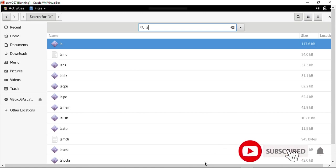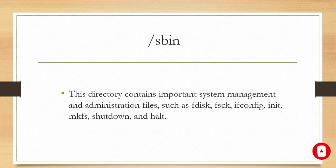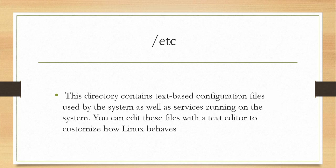Next we have the slash sbin directory. Same as the bin directory, it contains the binaries of some commands, but this directory contains specifically the commands related to the system. So slash sbin contains system management commands — for example, if you're checking network information you'd run ifconfig, or if you're shutting down your computer you'd run shutdown or halt. Any command that is related to system management is in the sbin directory.